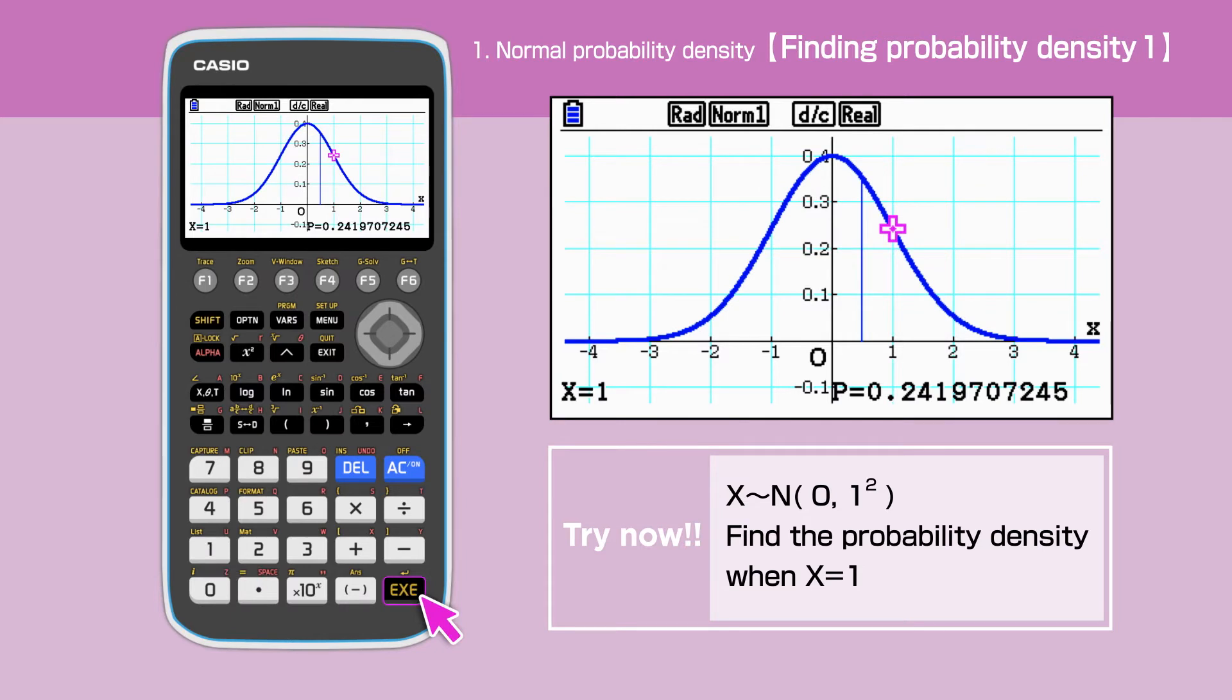Press Execute to calculate. The normal probability density when x is 1 is 0.241.